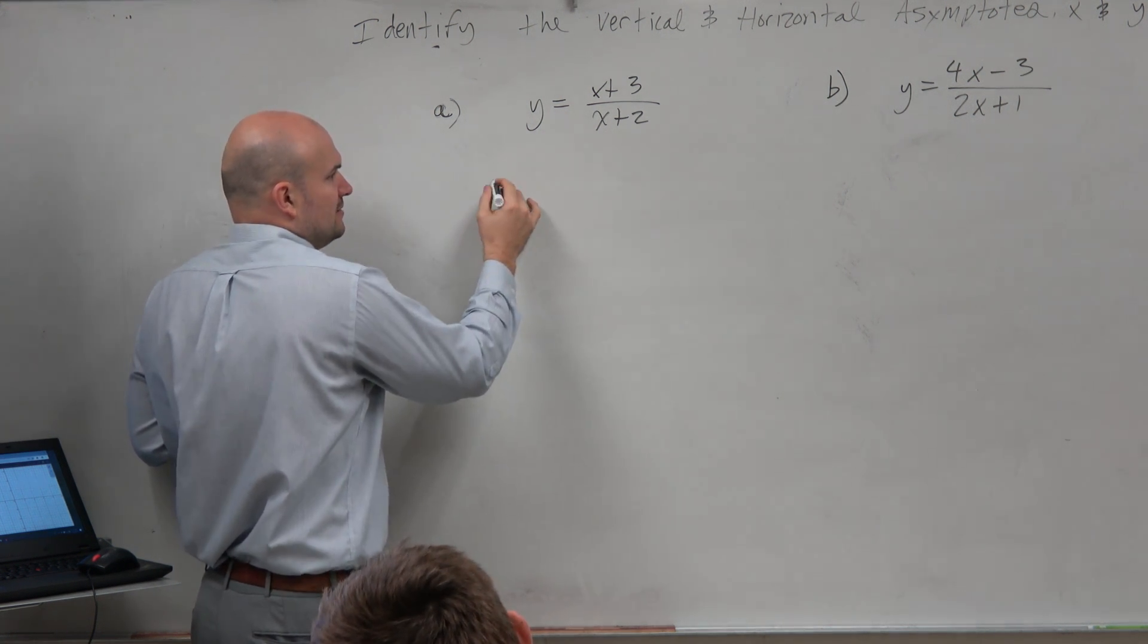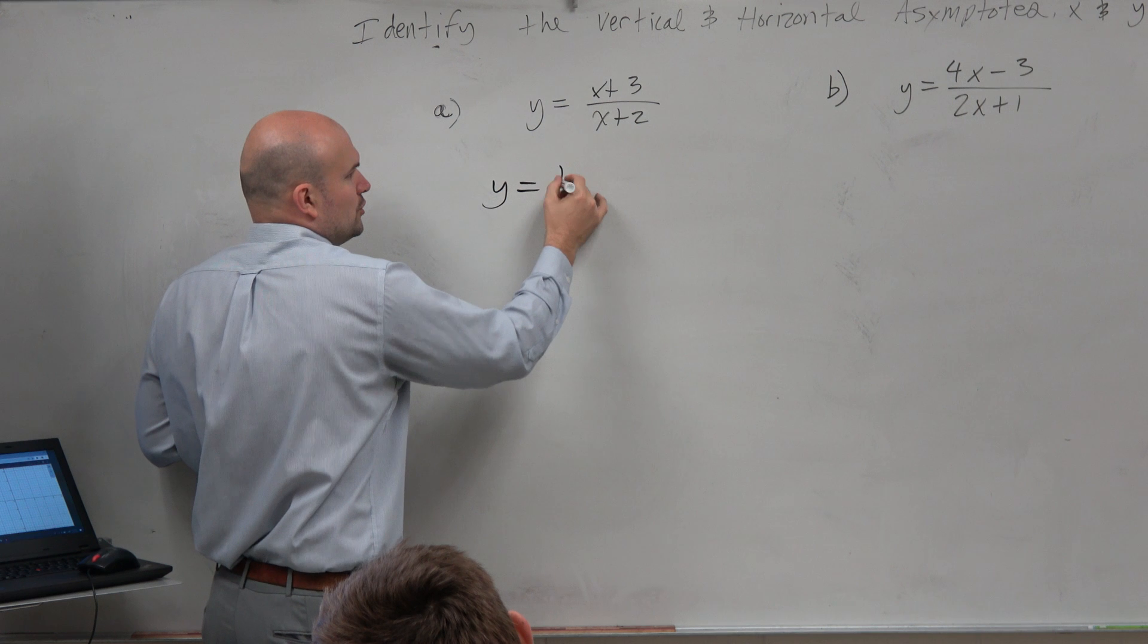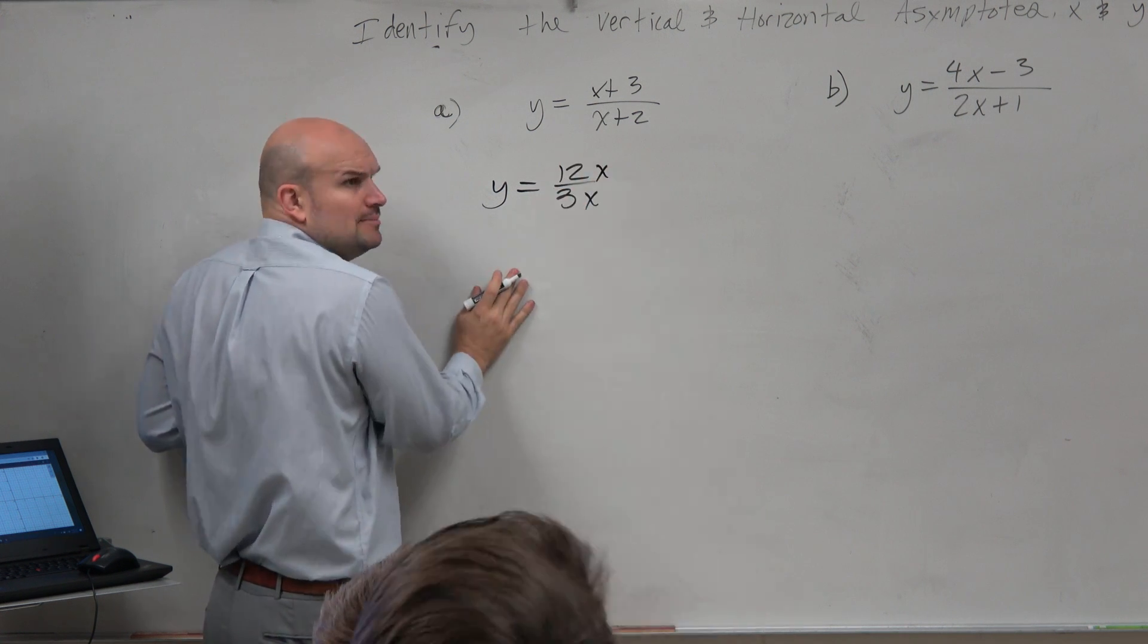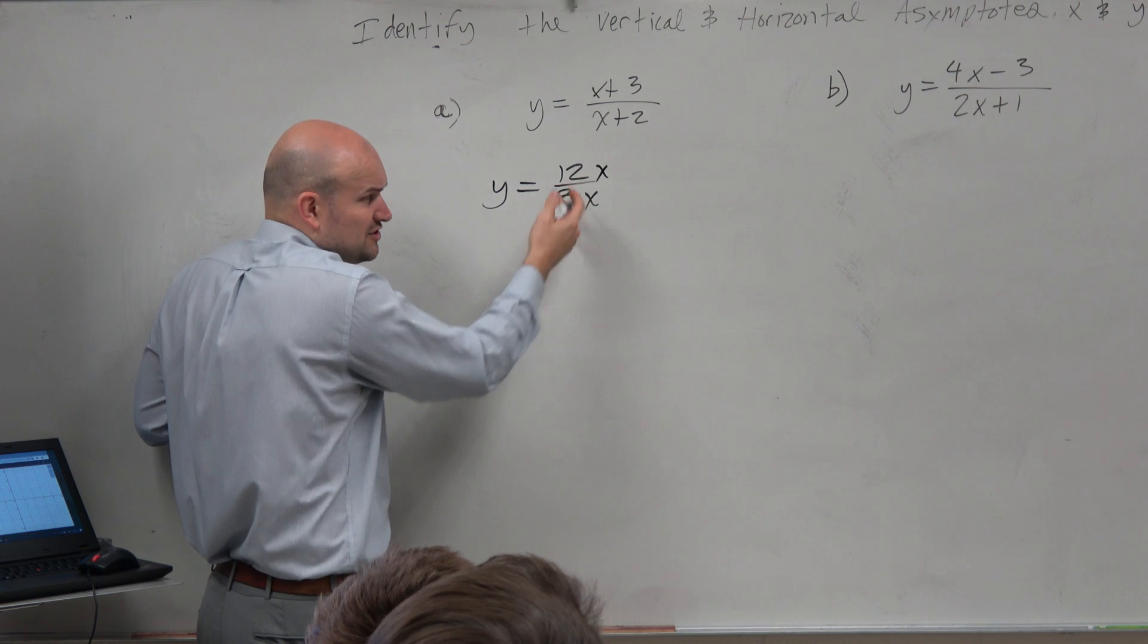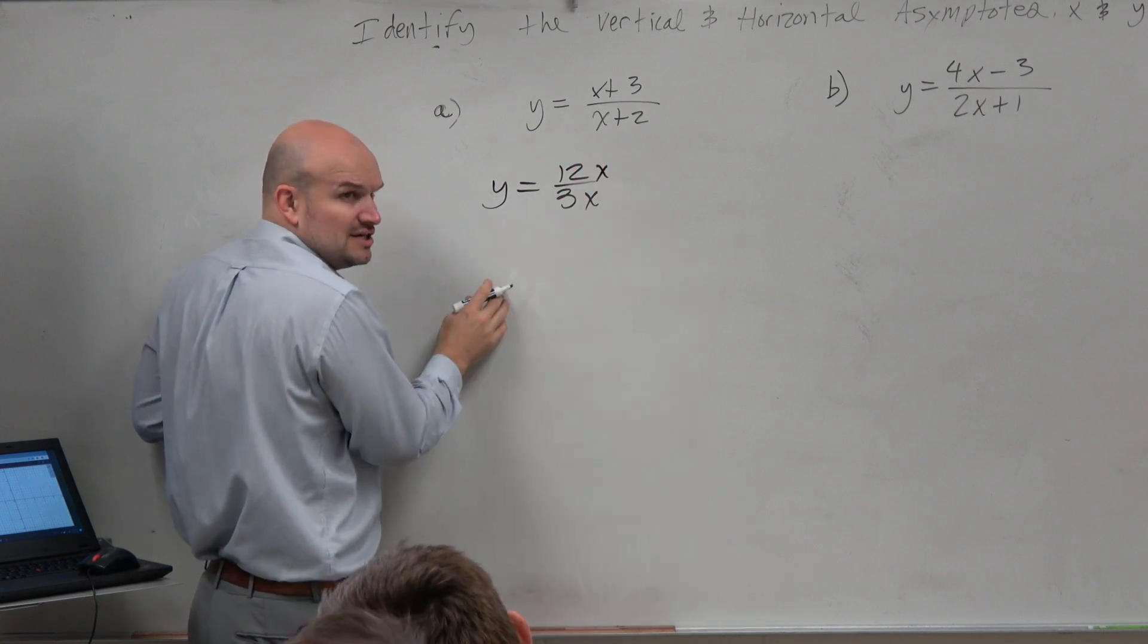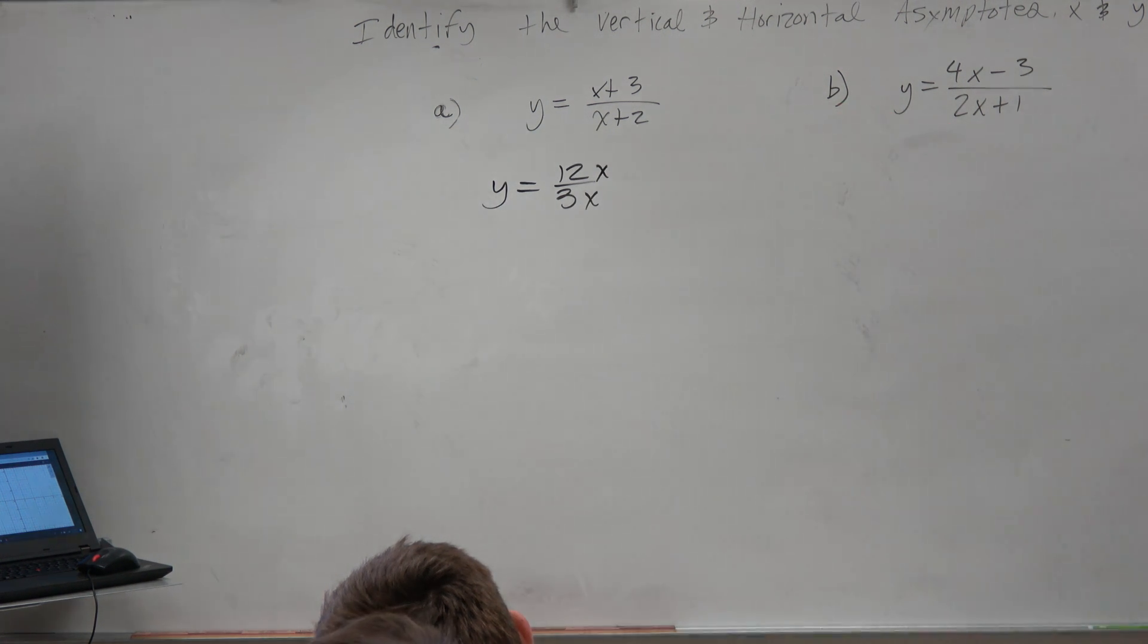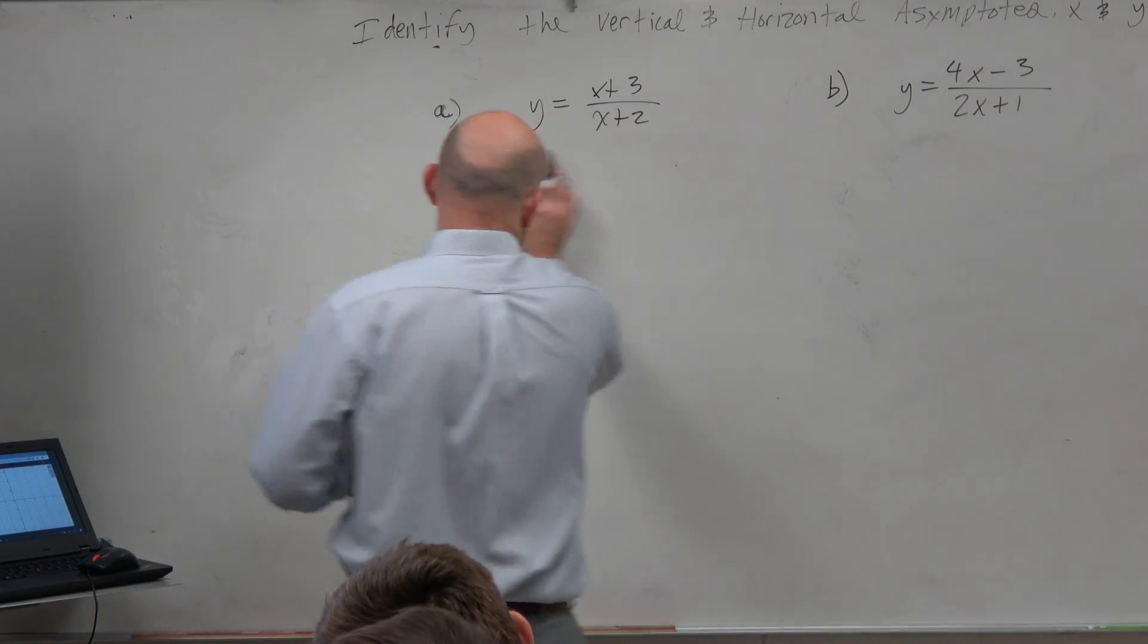If I had y equals 12x over 3x, then that could be simplified, right? And don't you think the simplified answer would be a little bit easier to graph than that answer or that problem? So why don't we try to graph this? Or why don't we try to divide this? See if we can get a simplified answer.